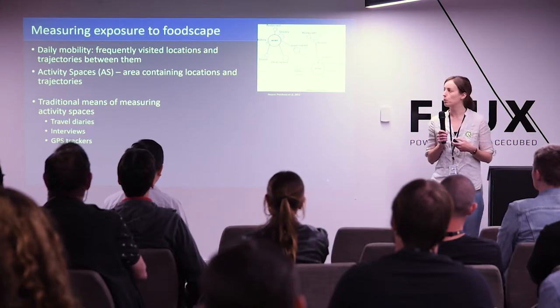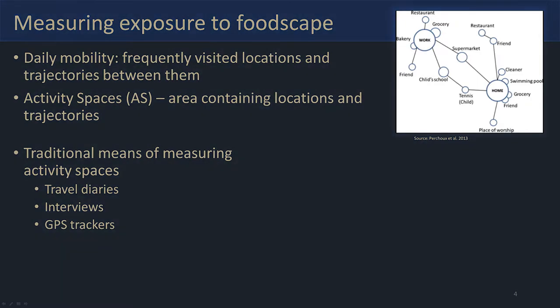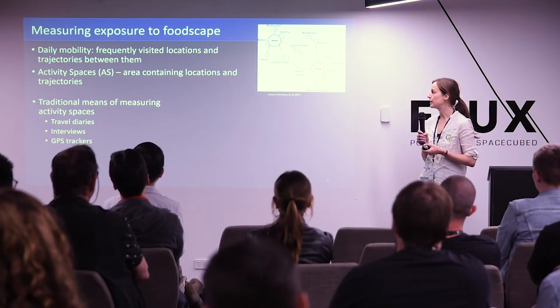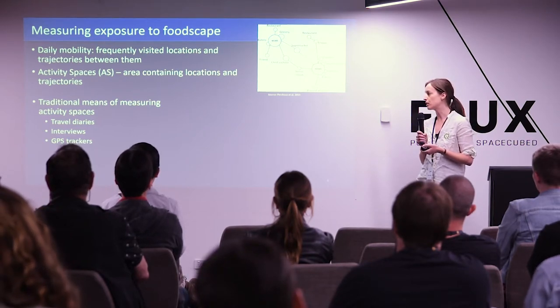How do we measure exposure to the foodscape? We need to get an idea of daily mobility — the frequently visited locations you go to throughout the week and month, and the trajectories between them. So you've got your home and work as your most frequently visited locations, and then other places like school, supermarket, and friends' places, plus the trajectories between them. We're measuring this using something called activity spaces — the area that contains those locations and trajectories.